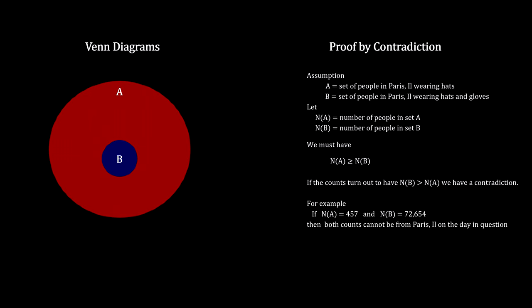For example, this violation could happen if the count for hats was indeed taken in Paris, Illinois, but the count for hats and gloves was taken in Paris, France.